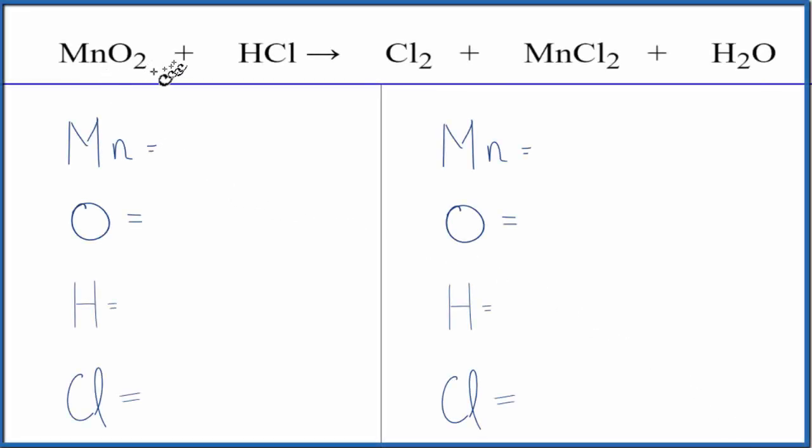To balance this equation, MnO2 plus HCl, that's manganese dioxide plus hydrochloric acid, let's count the atoms up on each side of the equation.